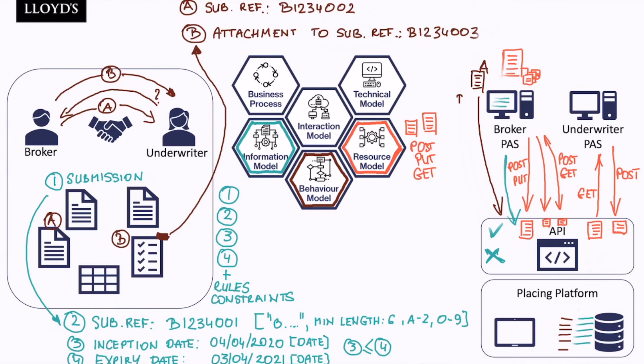Let's now consider the broker system is sending the attachment to the submission reference. We can see it being posted to the API, and there the basic validation is actually successful because the submission reference is of the correct format and it ticks all the boxes of the information model rules which we previously talked about.